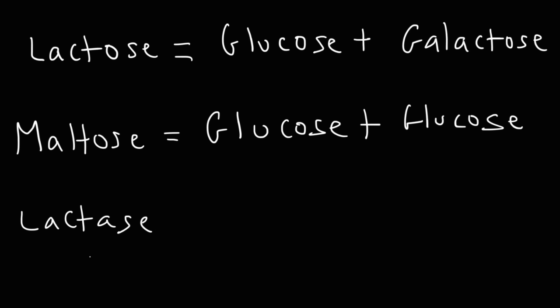Lactase, whenever you hear the ending -ase, that is an enzyme. Lactase is the enzyme that breaks down lactose into glucose and galactose. So notice the difference between lactose and lactase. Whenever you see the suffix -ose, that tells you you're dealing with a carbohydrate. Think of glucose, fructose, galactose—it tells you it's a sugar. But if you hear the suffix -ase, you're dealing with a protein-based enzyme.